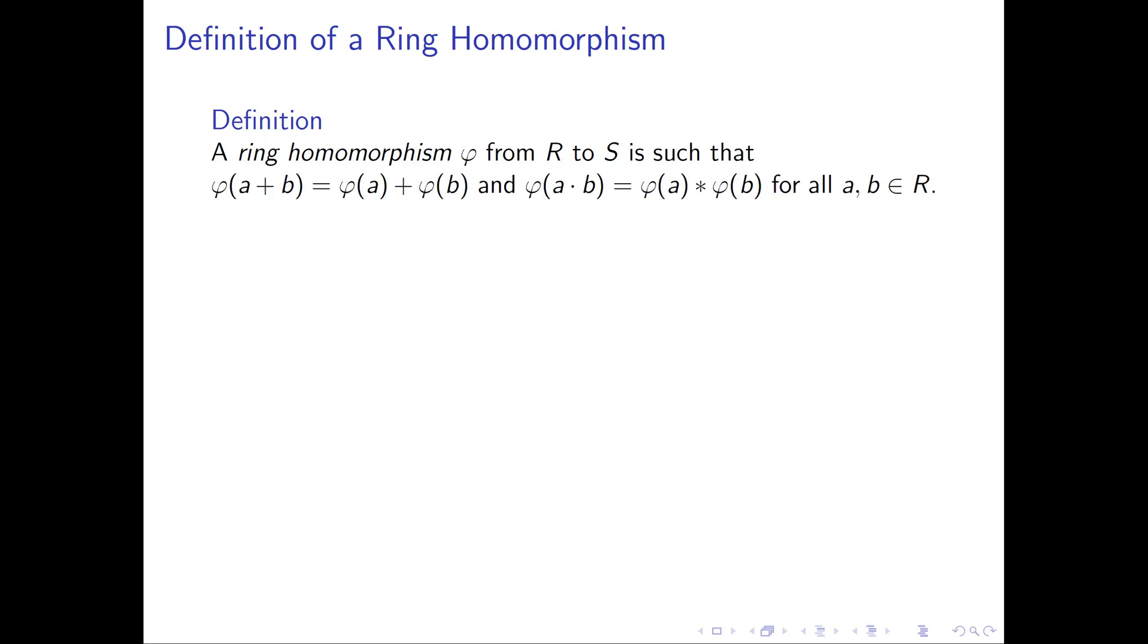That's the formal definition, but I'd like to break this down and talk about how we should really internalize this definition. First of all, remember that rings are examples of groups with additional structure. If we forget that R and S are rings and just think about them as groups, a ring homomorphism in particular has to be a group homomorphism. So our group operation is addition, and this first criteria, that phi of the quantity A plus B needs to equal phi of A plus phi of B, is the requirement that the map phi from R to S be a group homomorphism.